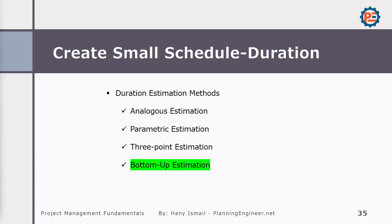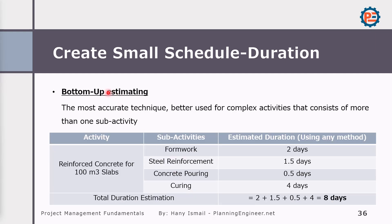The bottom-up estimation is the most accurate technique, better used for complex activities consisting of more than one sub-activity. For example, reinforced concrete for 100 cubic meters of slabs is decomposed into: formwork 2 days, steel reinforcement 1.5 days, concrete pouring 0.5 days, curing 4 days — giving a total duration of 8 days.